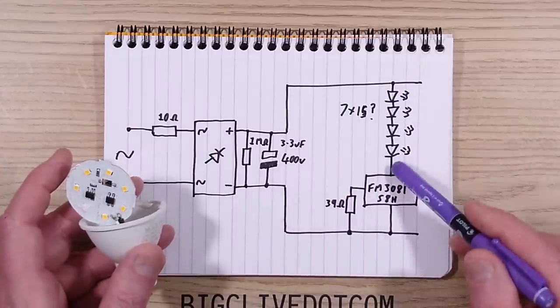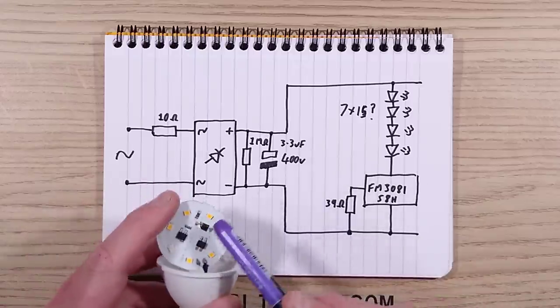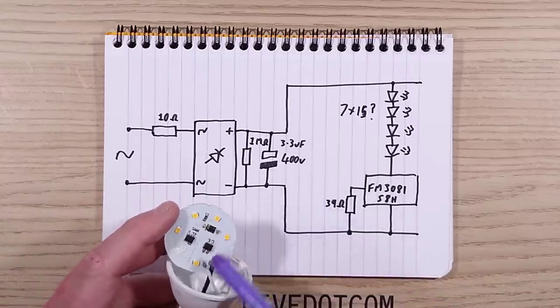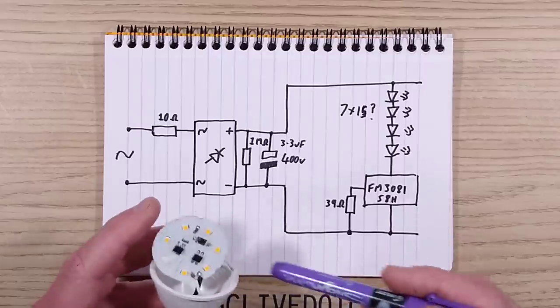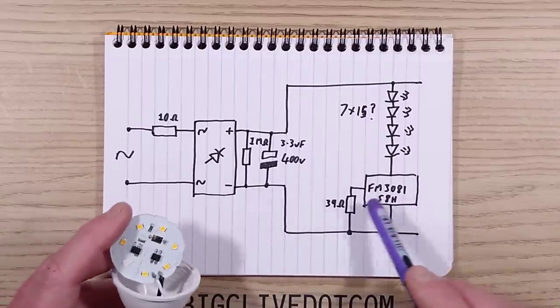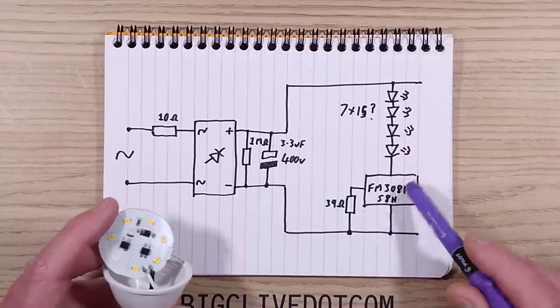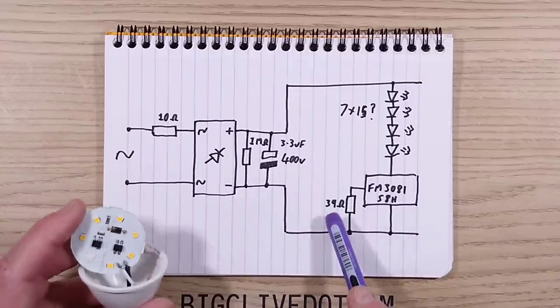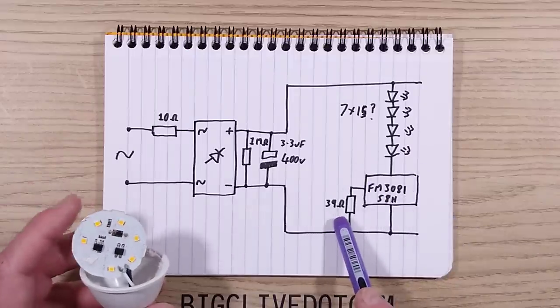Then we've got a matrix of 7 LEDs. I reckon that each LED probably contains 15 chips. They really have cut down the number of LEDs here by using multi-chip LEDs.